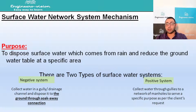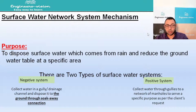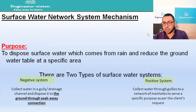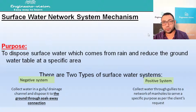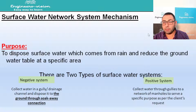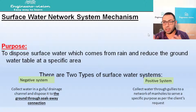First of all, we need to know what the surface water network mechanism is — what surface water itself is, and why we need a surface water network and a groundwater network. This is a combined system we use to dispose of surface water coming from rain, or groundwater coming from underground. We have two different systems to implement this, depending on our design and the status of the area.